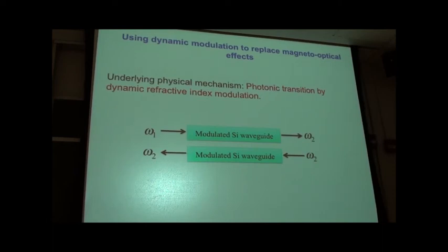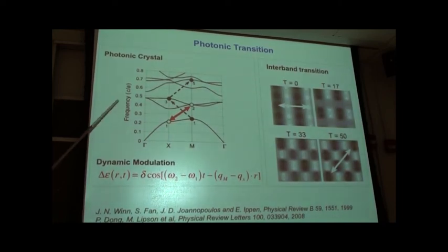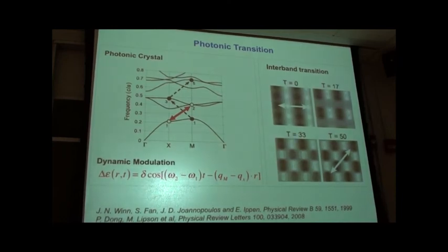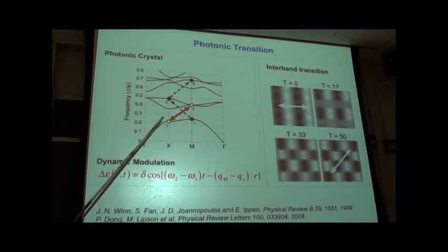What we are going to show is that you can do so by specifically designing and configuring a silicon waveguide and modulating the dielectric function in a very specific way. The underlying microscopic mechanism is something we call photonic transition by dynamic refractive index modulation. The idea of a photonic transition is a pretty old one — the initial paper was done by my thesis advisor, Professor John Joannopoulos, more than a decade ago. The idea is you take a photonic crystal, and you have a band structure — frequency as a function of wave vector. You then perturb the photonic crystal by modulating its dielectric function as a function of space and time, and the modulation with a particular frequency and wave vector can couple different states together. This is like transitions occurring in electronic systems, but it involves photons — hence photonic transitions.